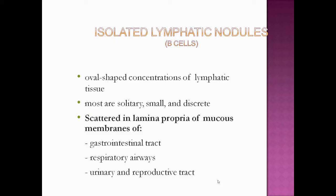Isolated lymphatic nodules are oval-shaped concentrations of lymphatic tissue. They are mostly solitary, small, and discreet, scattered in the lamina propria of the mucous membrane of the gastrointestinal tract, the respiratory airways, and the urinary and reproductive tracts.